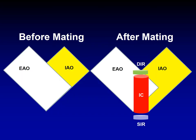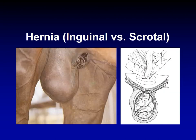The external abdominal oblique has muscle fibers going caudally and ventrally, whereas the internal abdominal oblique goes cranially and ventrally — this is the normal situation. When contraction happens during mating, the deep inguinal ring and superficial inguinal ring widen up and open, making this an area where the intestine, especially the jejunum, gets entrapped during mating. This is a scrotum full of small intestine, which means this is a scrotal hernia or inguinal hernia.